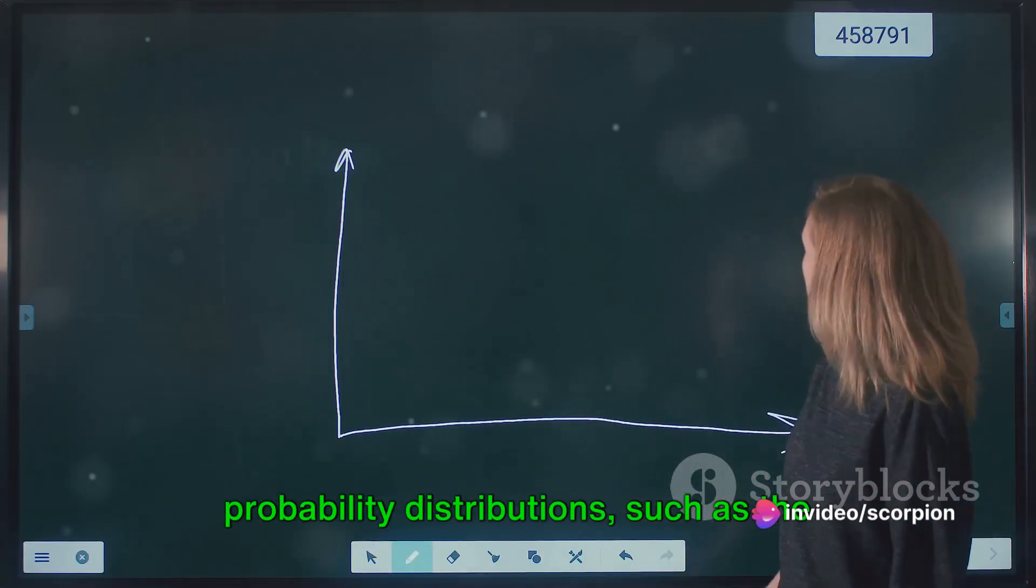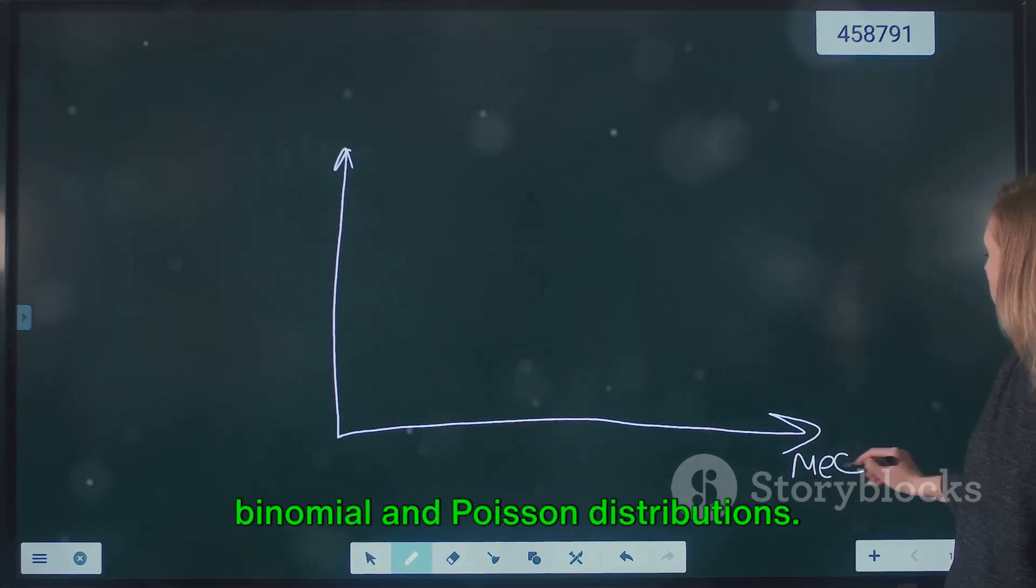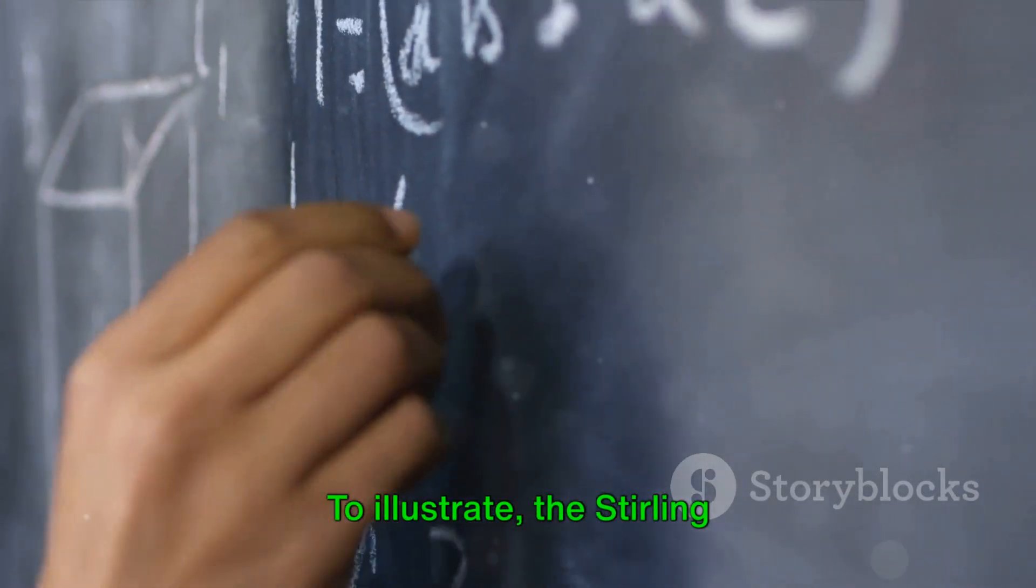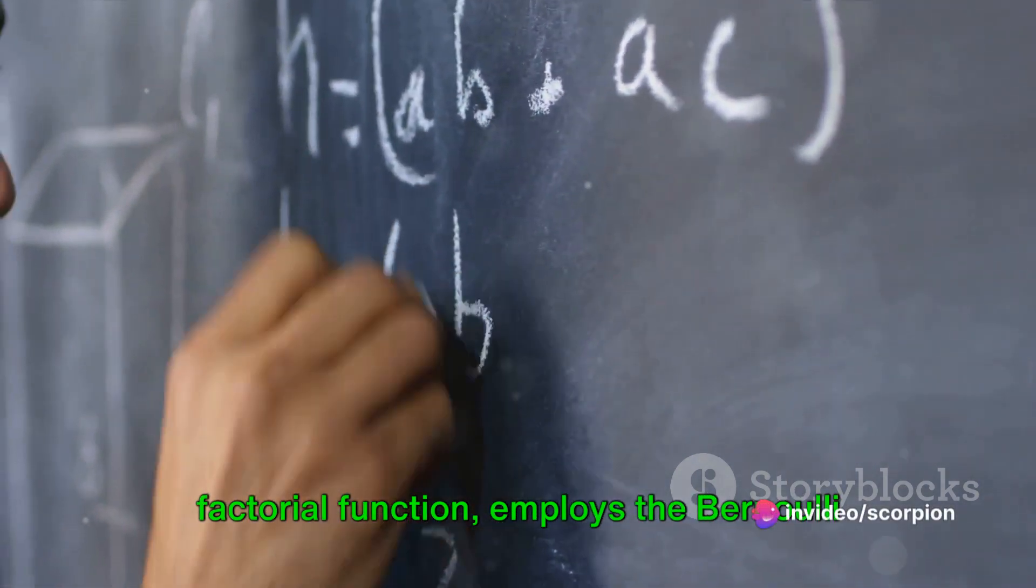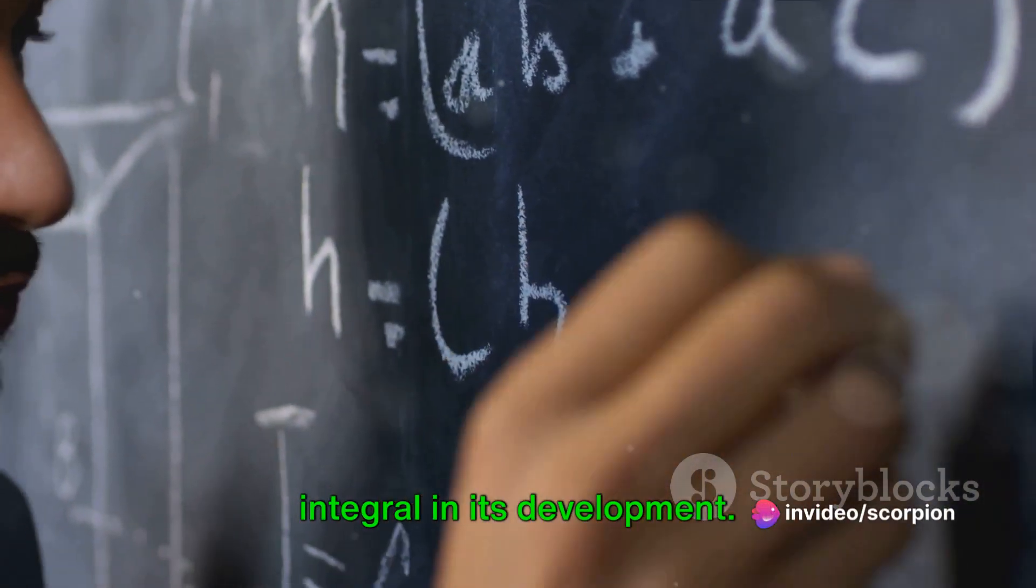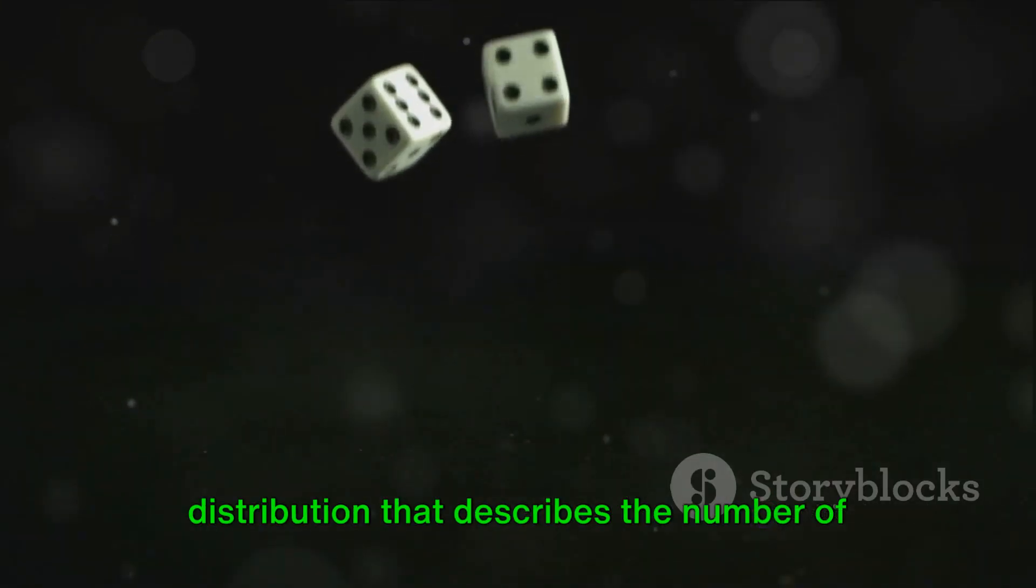To illustrate, the Stirling approximation, which approximates the factorial function, employs the Bernoulli integral in its development. The binomial distribution, a probability distribution that describes the number of successes in a sequence of independent trials, derives its probability mass function using the Bernoulli integral.